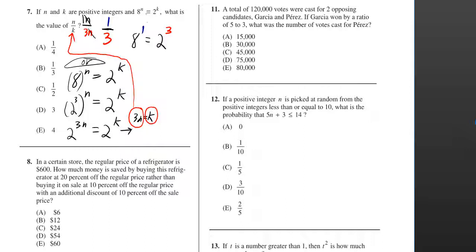You can immediately realize that 1 for n and 3 for k will work, because 8 to the 1 is equal to 2 to the 3. Because 2 to the 3 is just 8.